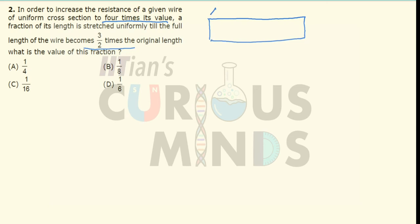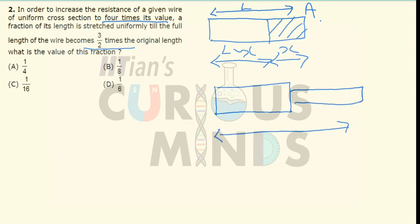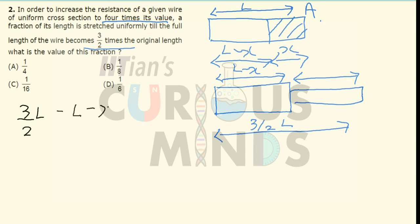Let us say there is a wire of length L and area A. Some fraction of the wire, let us say X, is stretched and the remaining length will be equal to L minus X. This is stretched until the entire length of the wire becomes 3/2 times its original length. The right-hand section will have a length of 3/2 L minus (L minus X), which equals L/2 plus X.